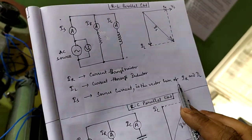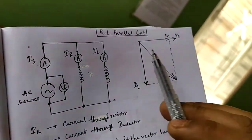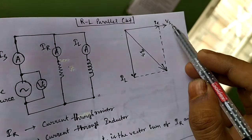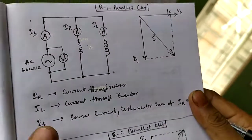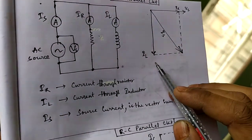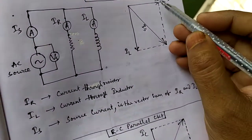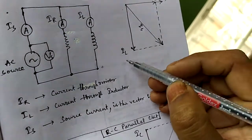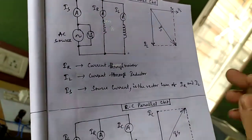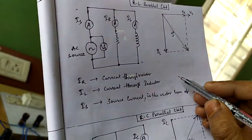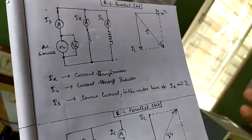Is, the source current, is the vector sum of Ir and Il. In the phasor diagram for the RL parallel circuit, Ir and Vs are in phase, and Il is 90 degrees lagging with respect to Vs. The resultant of Ir and Il gives Is. You can calculate Is as the square root of Ir squared plus Il squared.